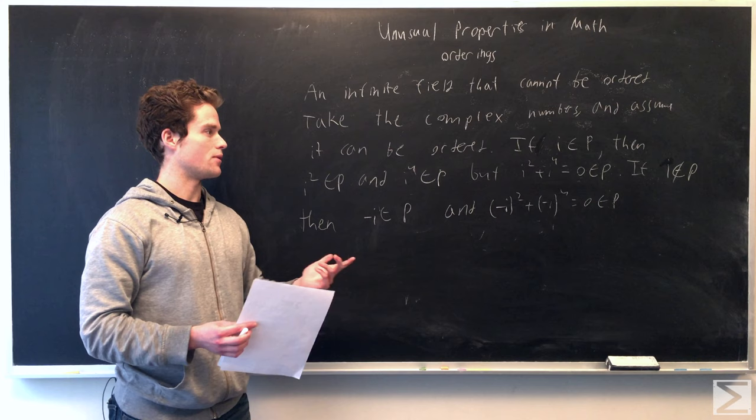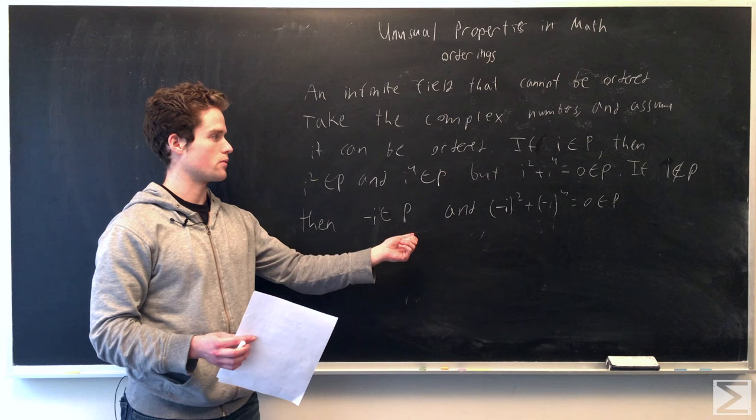And same if we assume i is not in the set, i is negative, then minus i is in the set, and we do the same thing, we arrive at a contradiction. And so the complex numbers cannot be ordered.